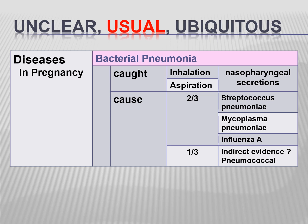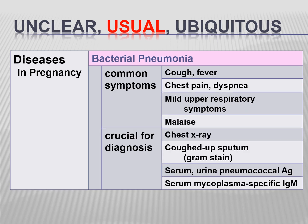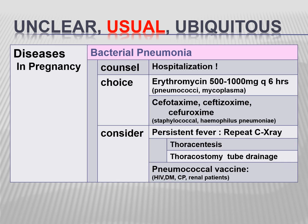Pneumonia is spread by droplet transmission. Two-thirds of cases are caused by Streptococcus pneumoniae, Mycoplasma pneumoniae, and Influenza A, and a third may be pneumococcal. Symptoms include cough, fever, dyspnea, respiratory symptoms, and malaise. Diagnosis is made with chest X-ray, sputum Gram stain, and organism-specific antigens. Hospitalization is required; antibiotics of choice are erythromycin for pneumococcal and mycoplasma, and cephalosporins for Staphylococcus and Haemophilus pneumoniae. For persistent fever, repeat chest X-ray and perform thoracocentesis or thoracostomy tube drainage.